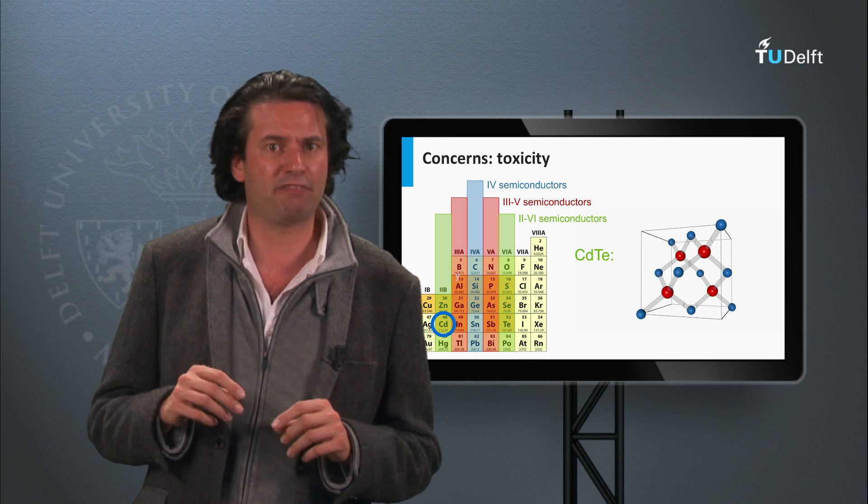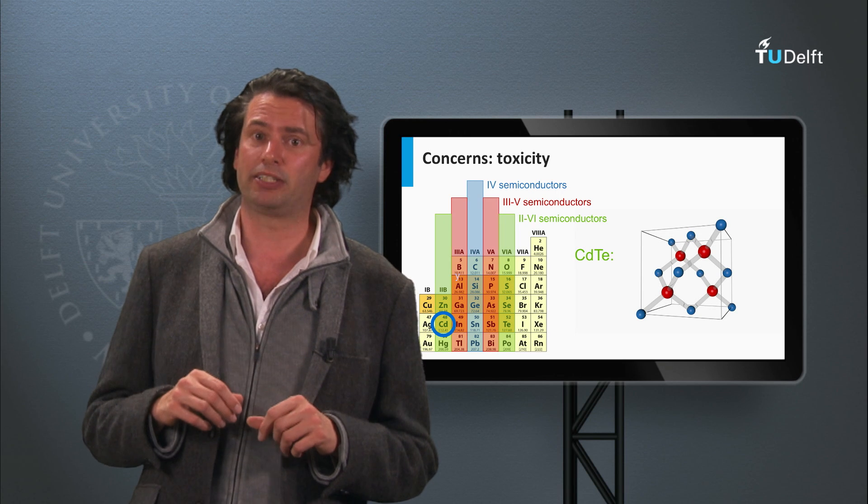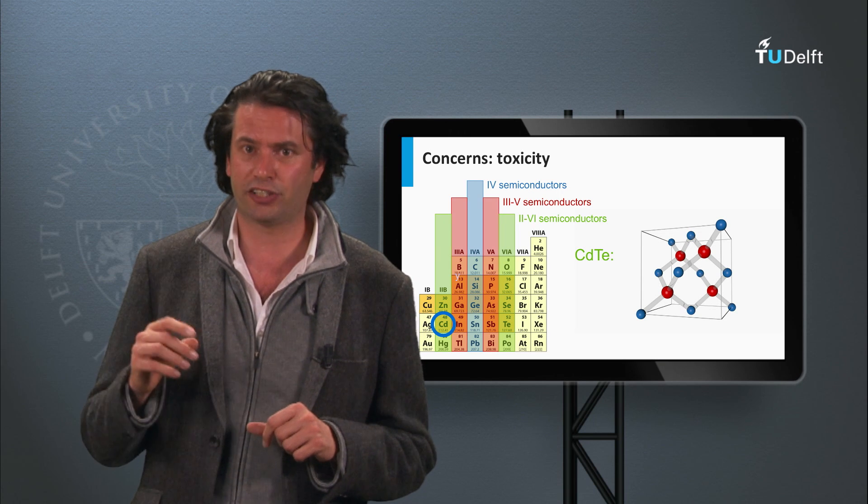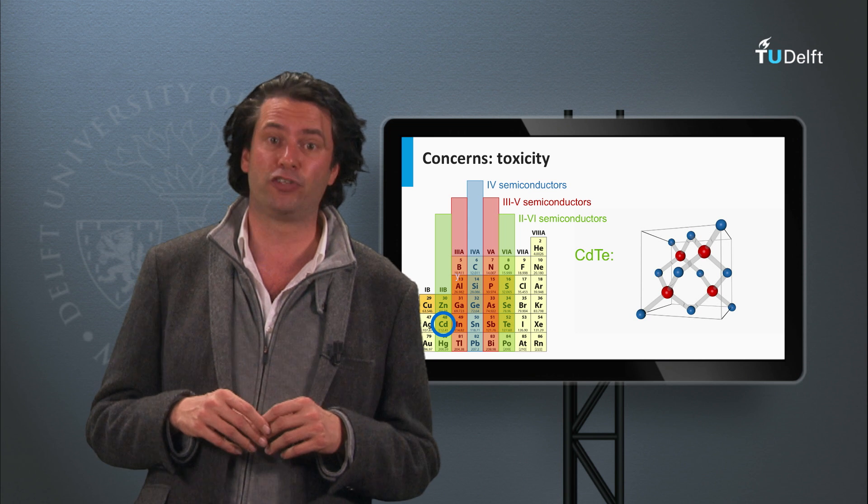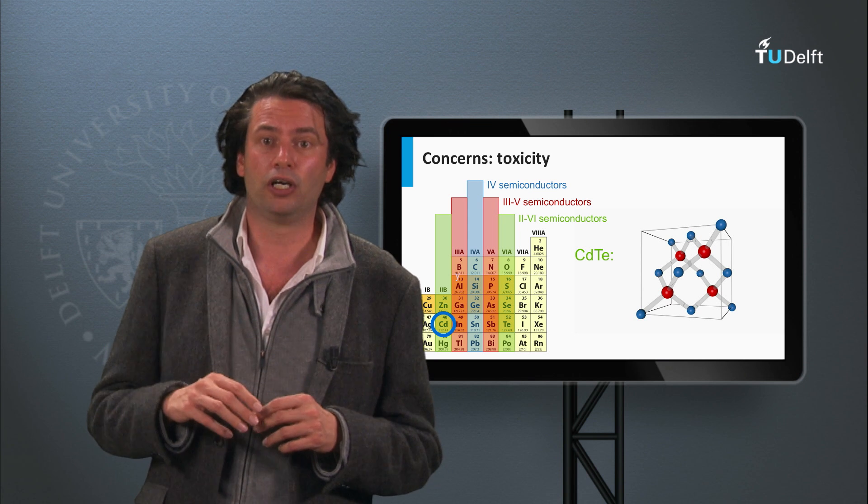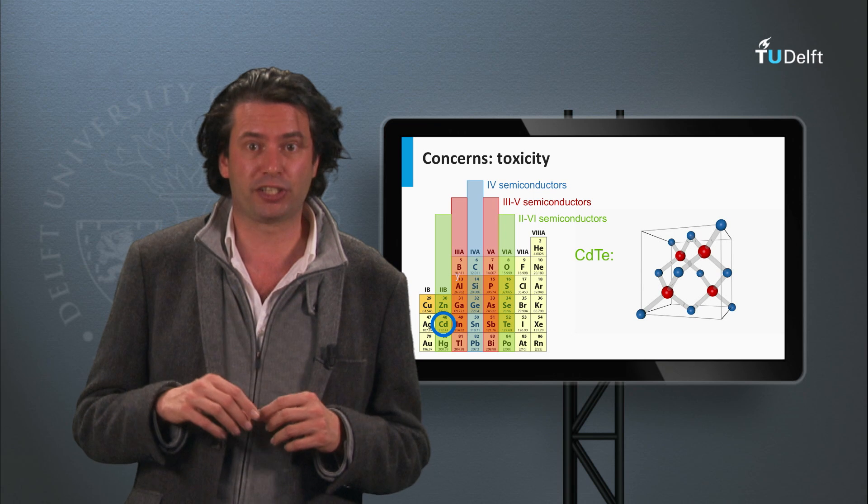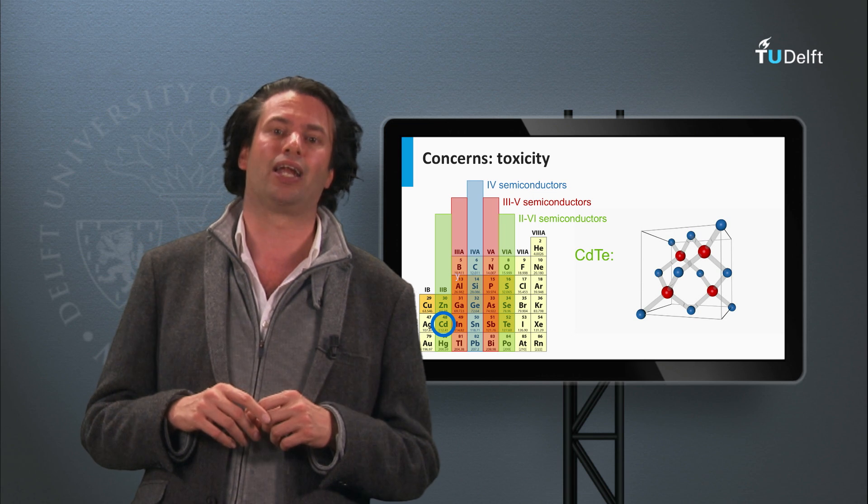Nevertheless, recycling schemes have been set up for installed cadmium telluride solar modules. For instance, First Solar has a recycling scheme in which a deposit of 5 dollar cents per watt peak is included, which covers the cost for the recycling at the end of the module's lifetime.